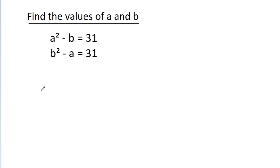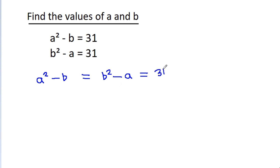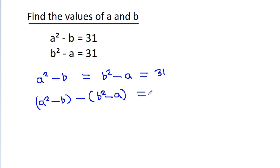Since both expressions equal 31, we have a squared minus b is equal to b squared minus a. Therefore, a squared minus b minus (b squared minus a) will be equal to 0.